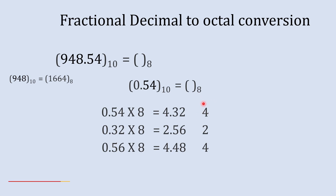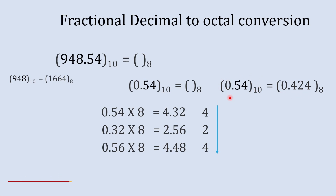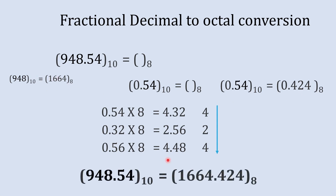Now we combine all these whole numbers to convert this decimal number into octal, writing these numbers from top to bottom. The first 4, then 2, and the final 4. So the octal equivalent to 0.54 decimal is 0.424. Combining both parts gives us the final result: 1664.424. Remember: for the whole number part write from bottom to top, and for the fraction number part write from top to bottom.